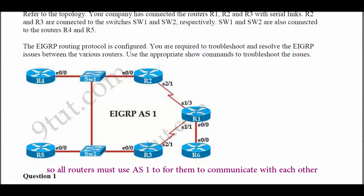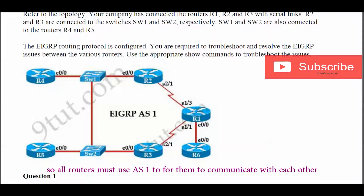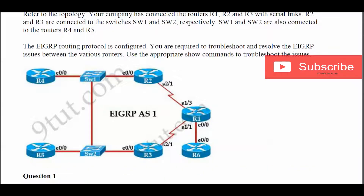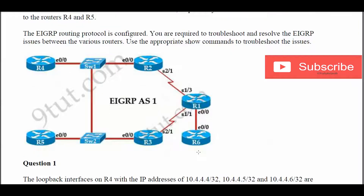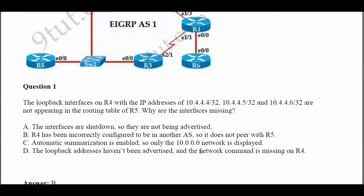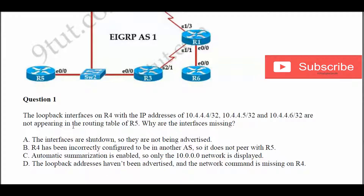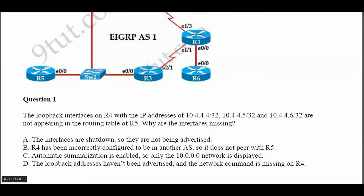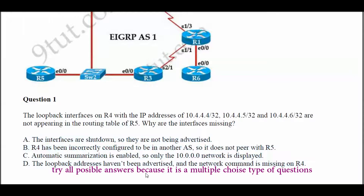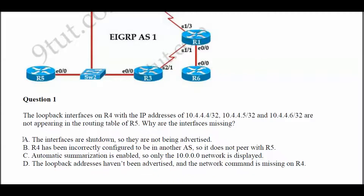Looking at the topology, all routers must use EIGRP AS number 1 to communicate with each other. Question 1: the loopback interfaces on R4 with IP addresses 10.4.4.4/32, 10.4.4.5/32, and 10.4.4.6/32 are not appearing in the routing table of R5. Why are the interfaces missing? This is a multiple choice question, so let's try all possible answers.